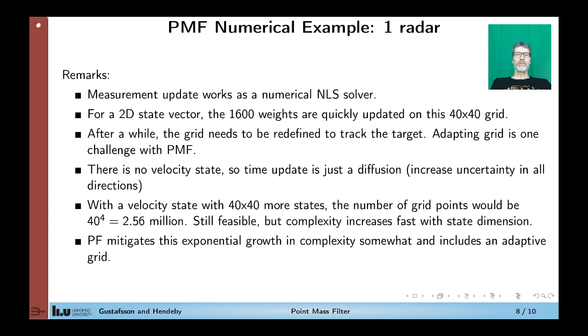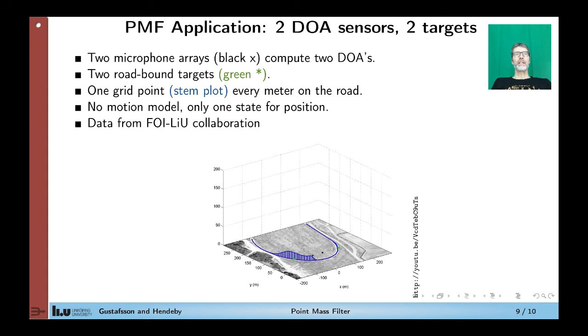The point mass filter is still quite useful in some applications compared to the particle filter. And I will show one such application here on the next slide. So this is real data from a collaboration with the FOI. The goal is to track vehicles on a road segment using two microphone arrays. On the black points here we have microphone arrays with four microphones at each point. And they approximate the direction of arrival of the engine sound from the vehicles. We have two vehicles here, the green dots, coming from each direction and they will meet somewhere here. And again there is no motion model, only one state for the position. And since we assume that the vehicles follow the road, it's a one-dimensional state space. So we just have to add grid points on the road here. And we define a grid point to cover one meter of the road each.